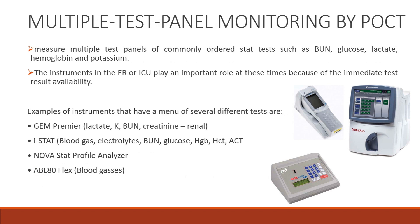Multiple test panel monitoring by point-of-care testing measures multiple panels of commonly ordered STAT tests, such as blood urea nitrogen, glucose, lactate, hemoglobin, and potassium. Instruments in the emergency room or ICU play an important role due to immediate test result availability. Examples include the GEM Premier for renal function tests, i-STAT for blood gases and electrolytes, the Nova STAT profile analyzer, and the ABL-80 FLEX for blood gases.